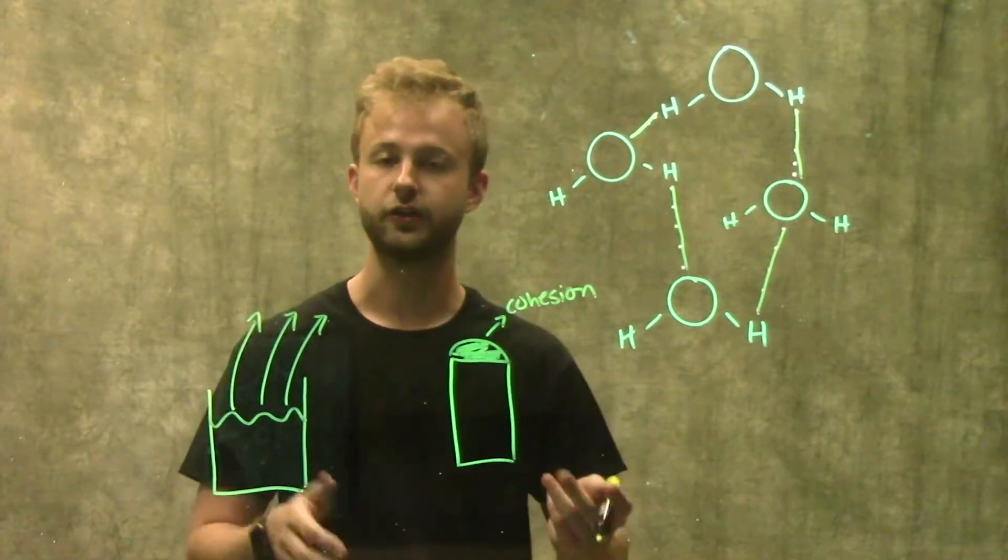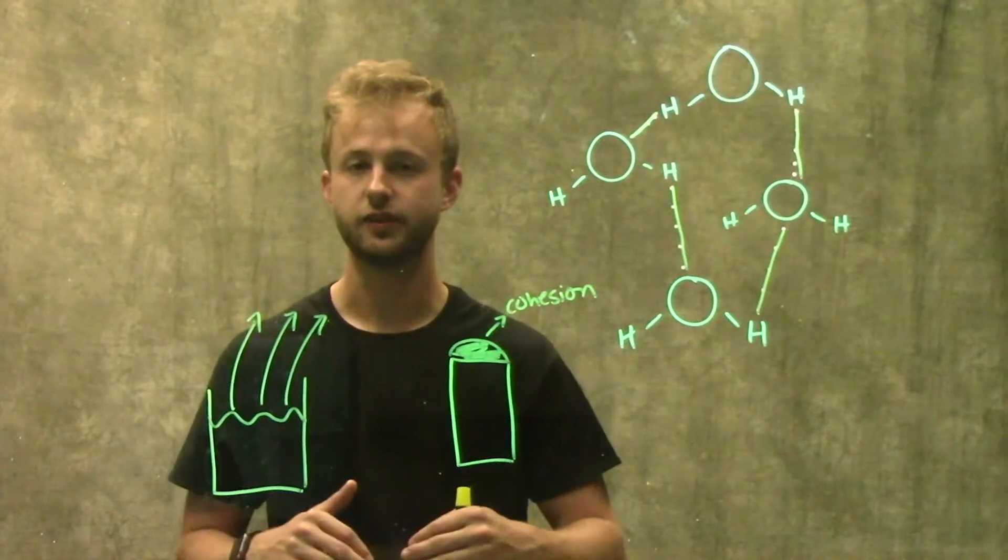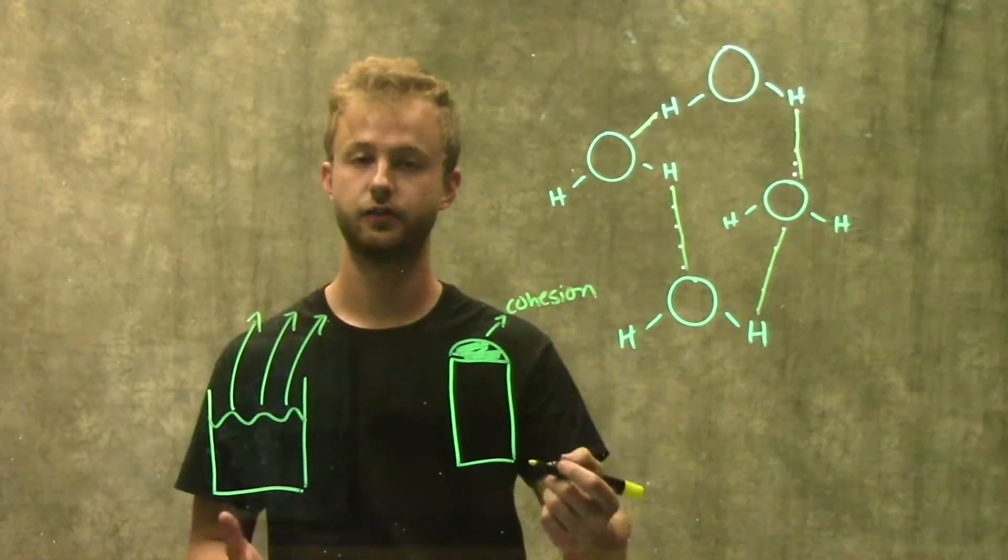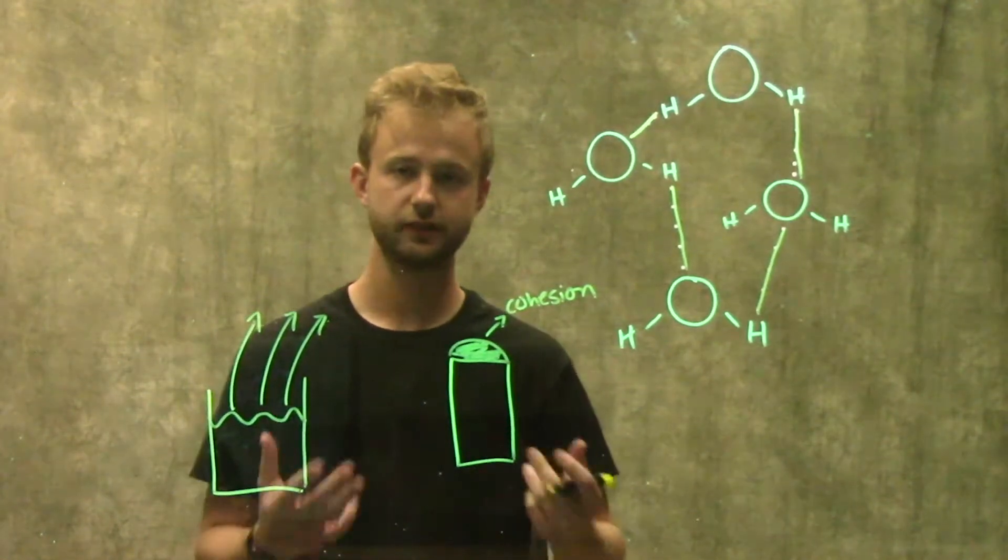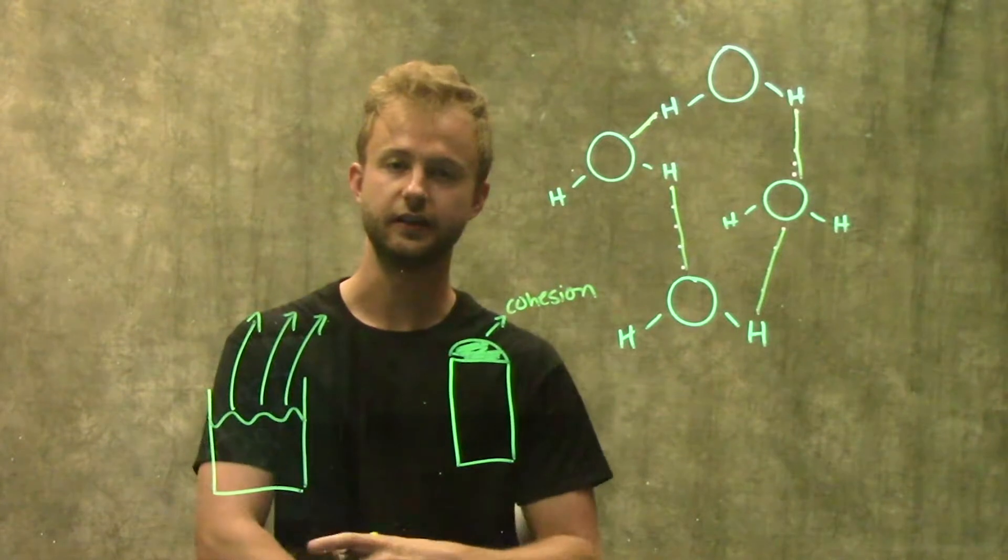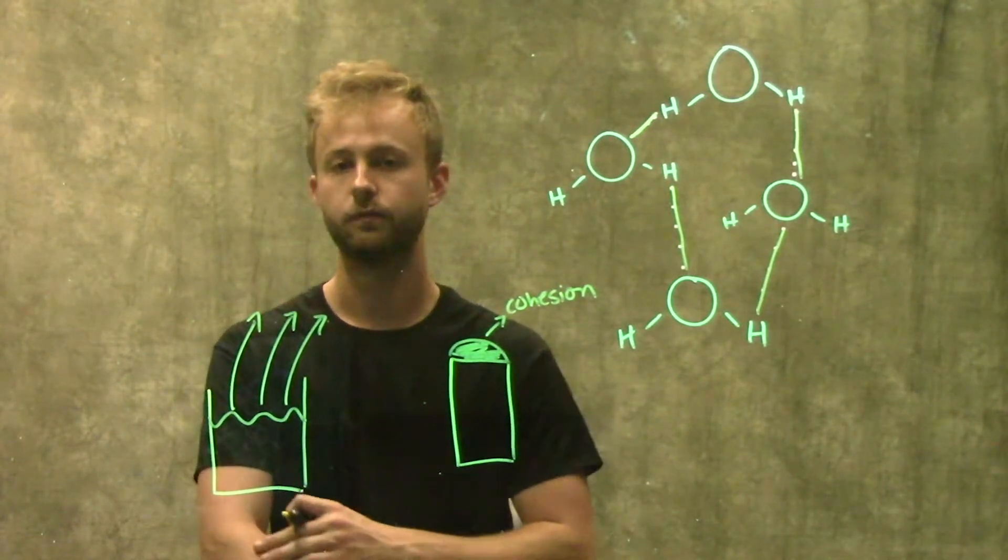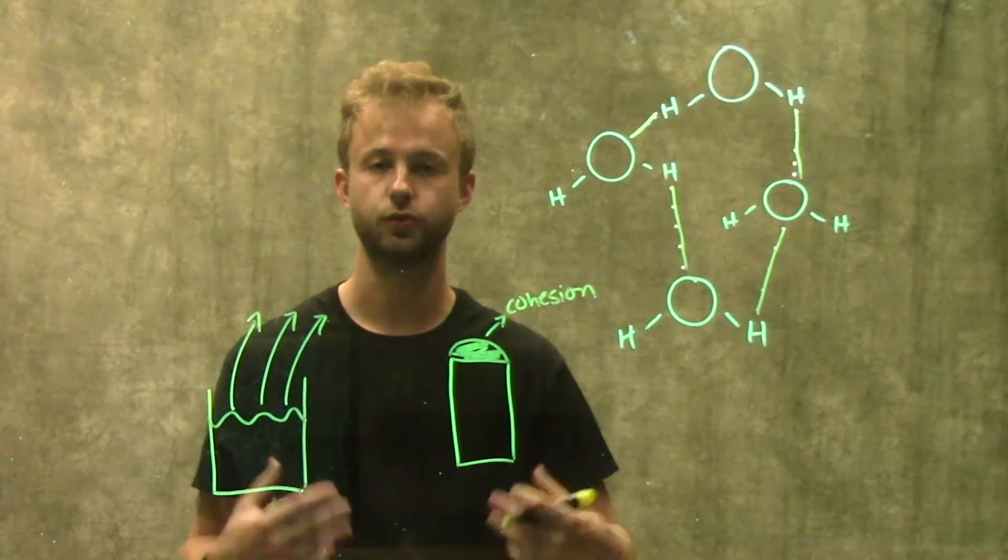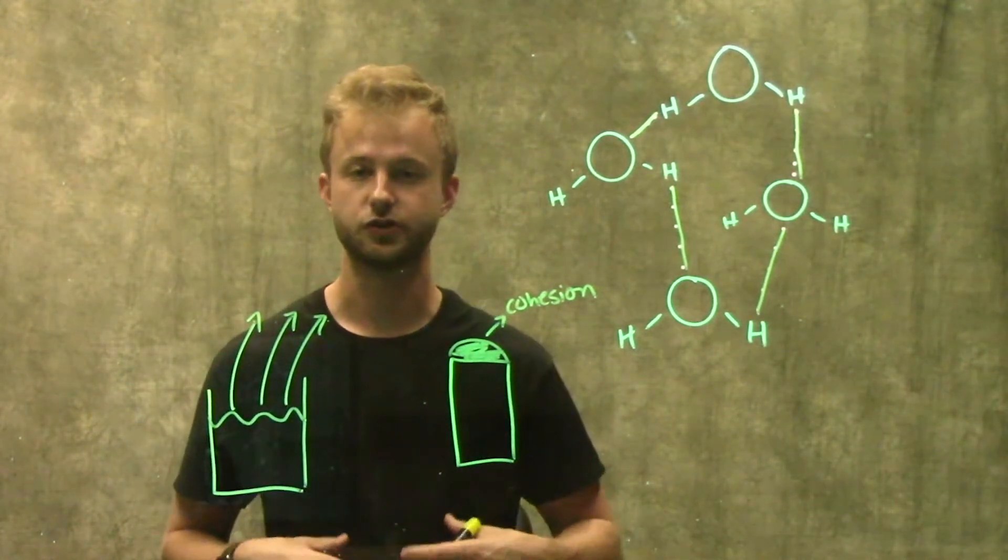When that happens, the molecules that are left behind have less energy, so they're not moving as fast, so they're cooler than the ones that just left. This is really important when we sweat. When we sweat and that evaporates, it leaves behind cooler or slow-moving water molecules which we feel as cooler, and it helps to cool us down and keep our body temperature stable.